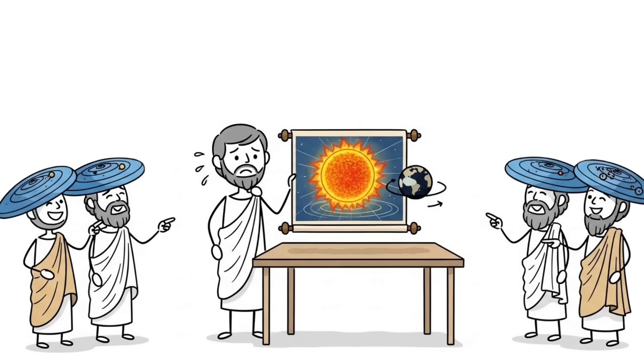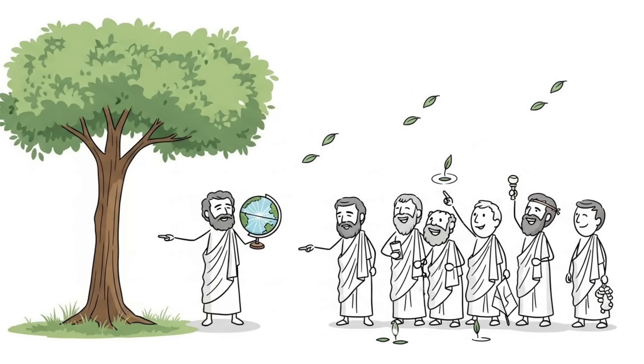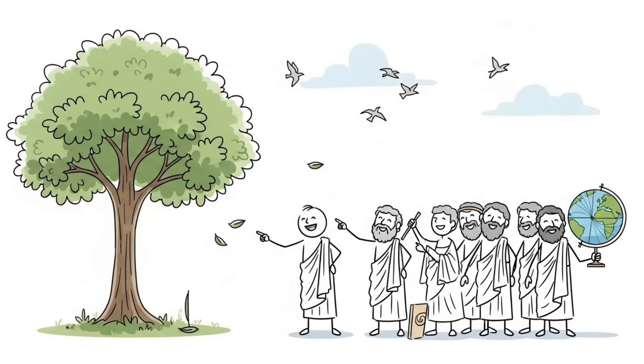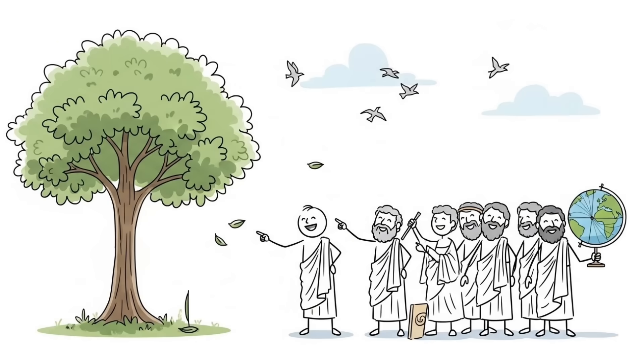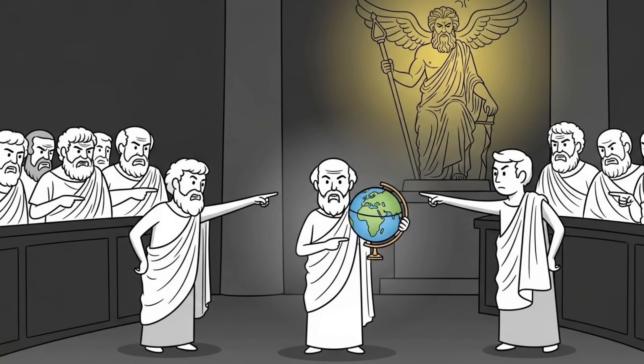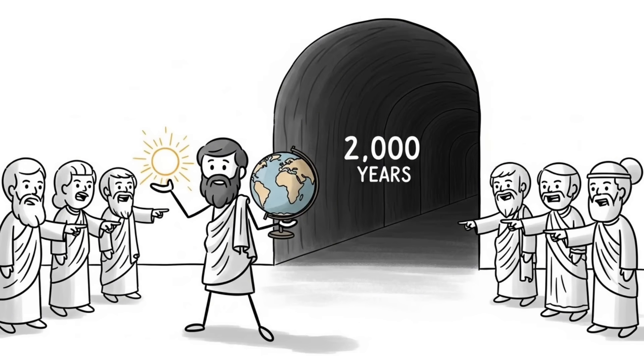But his peers thought he was insane. If Earth moved, wouldn't we feel constant wind? Wouldn't birds get left behind in the sky? One famous philosopher even said Aristarchus should be arrested for disrespecting the gods by moving the sacred center of everything. His ideas were so wild they were ignored for nearly 2,000 years.